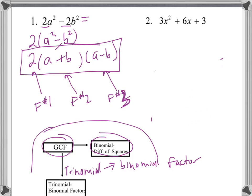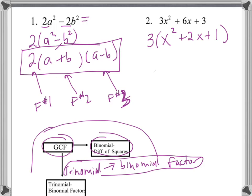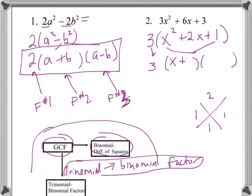Now we have a trinomial. The first thing we want to do is factor out the GCF, which is 3. We're left with x² plus 2x plus 1. In our decision-making schematic, since we're left with a trinomial, we look for binomial factors. Two numbers that multiply to 1 and add to 2 are 1 and 1, so this trinomial can be broken down into two more factors.